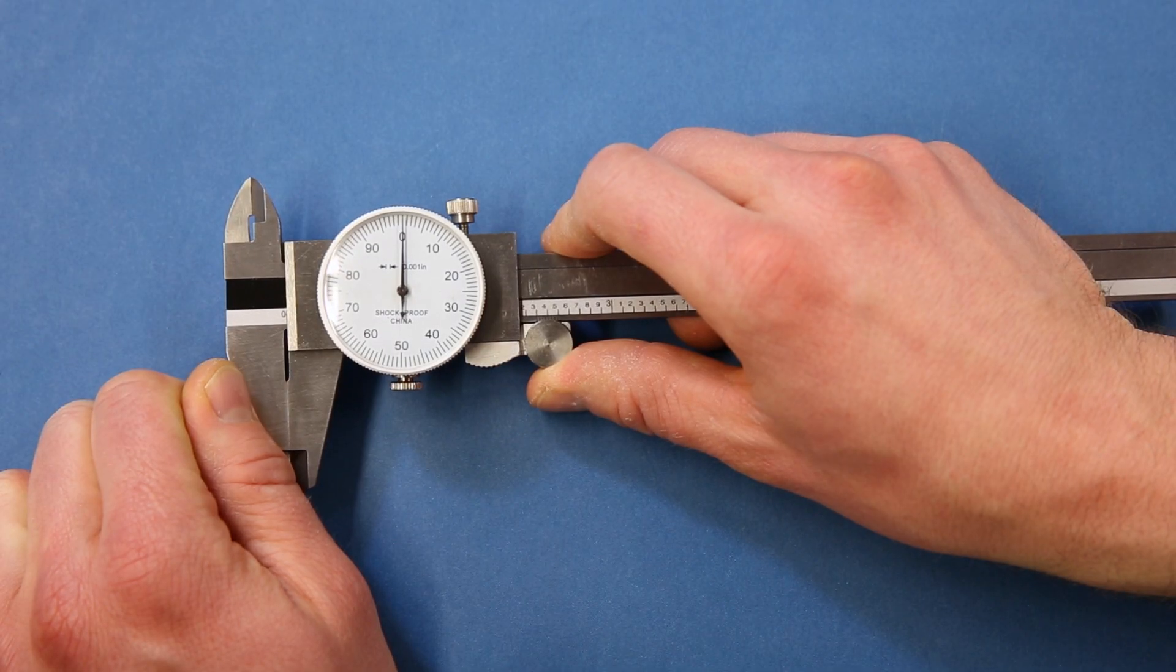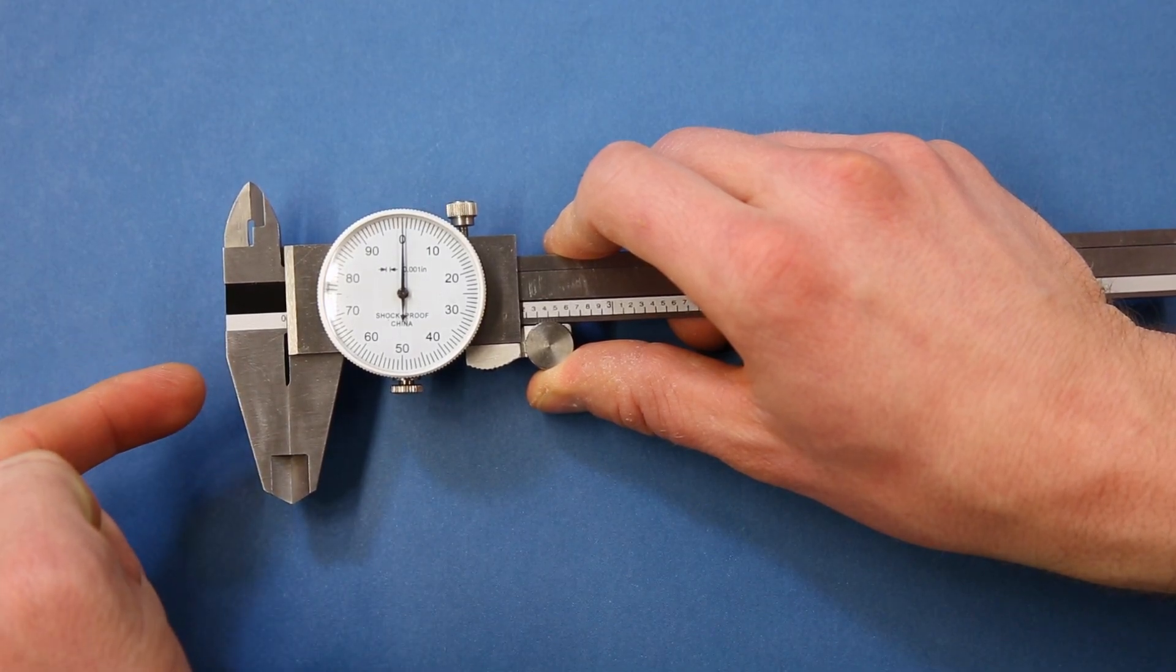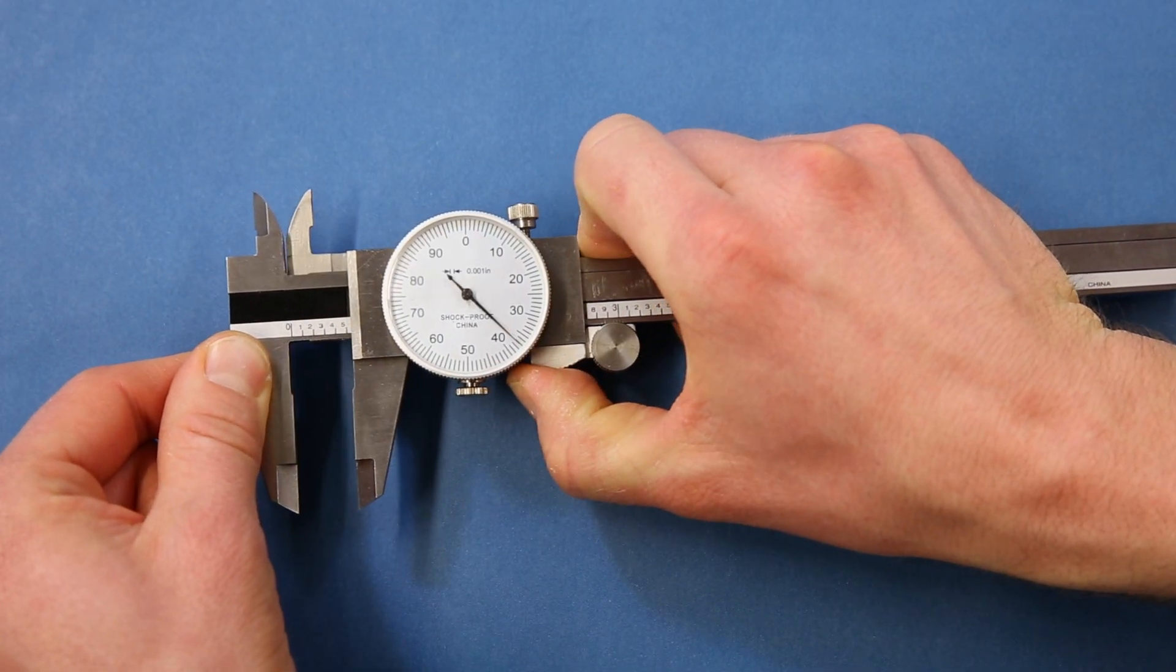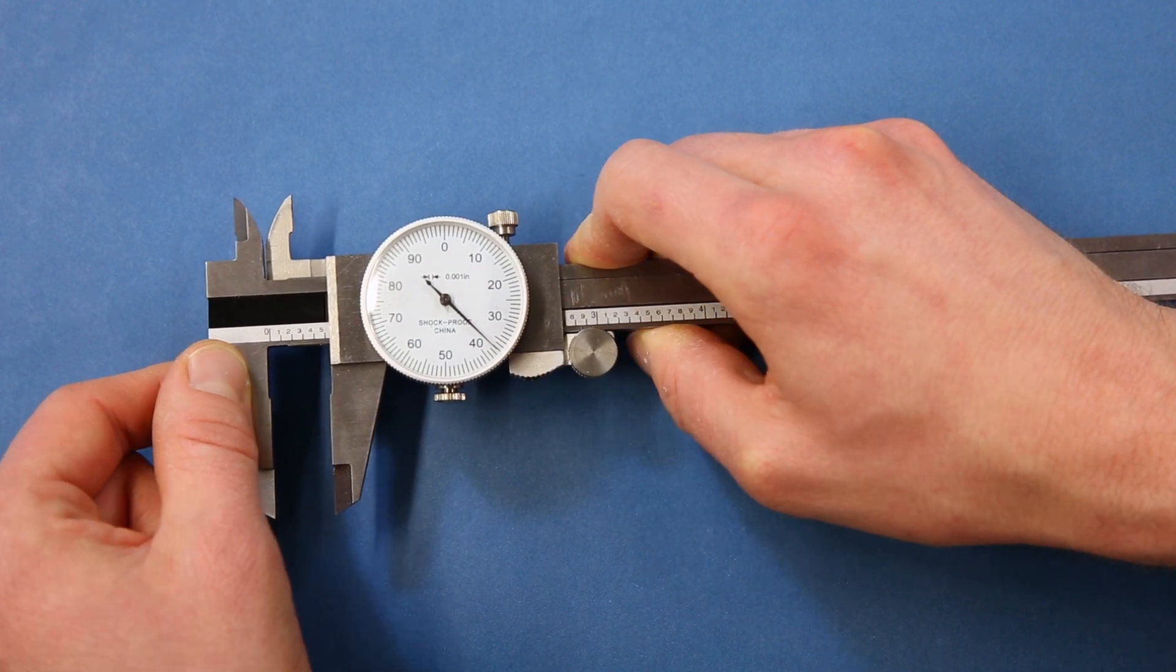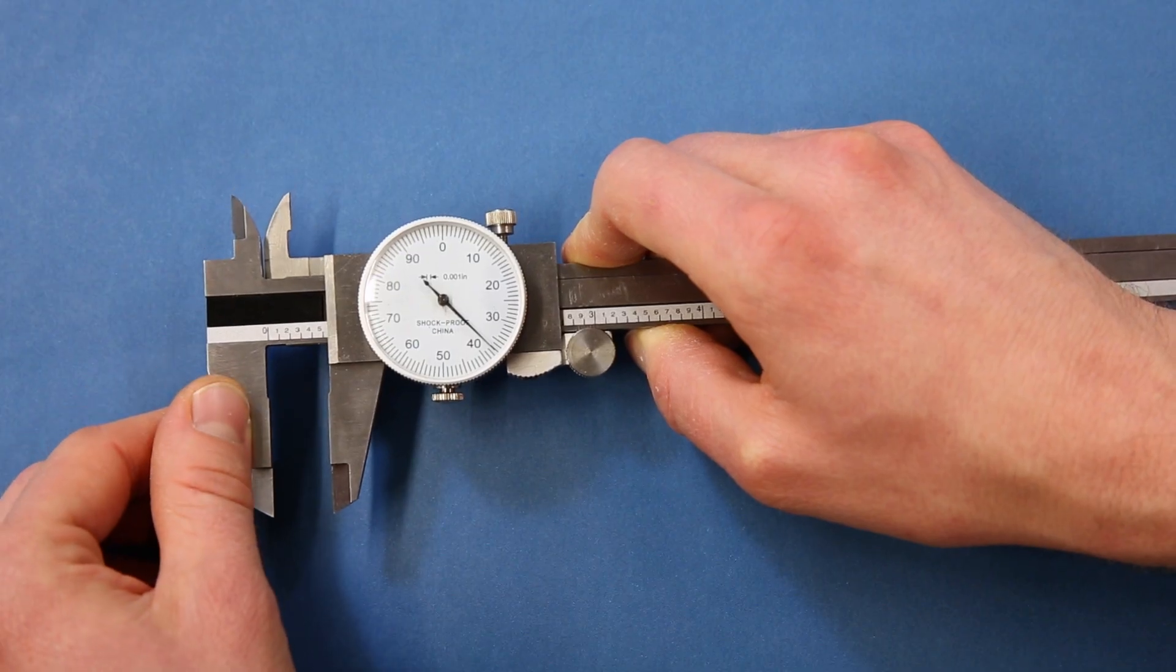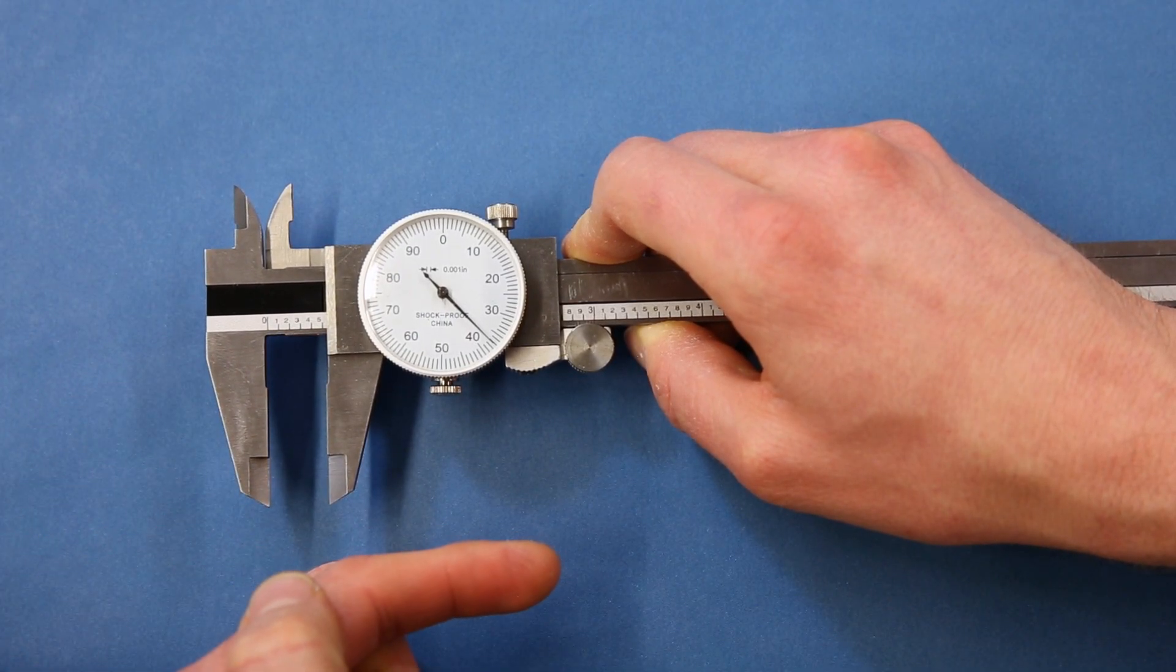Most modern slide calipers work on the same basic principle. There is a fixed main scale attached to one or more sets of jaws, and a slider that moves linearly across the main scale. The slider has the opposing set of jaws, which move to measure the object in question. You can read the distance measured by looking at how far the slider has moved on the main scale.